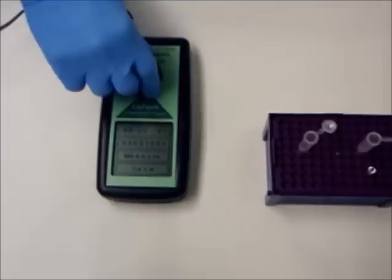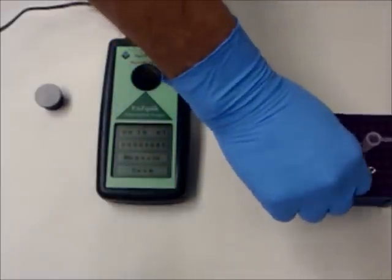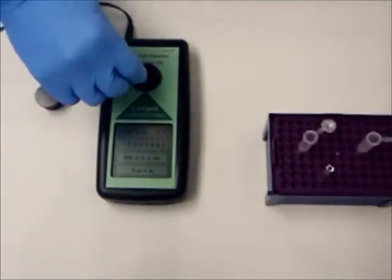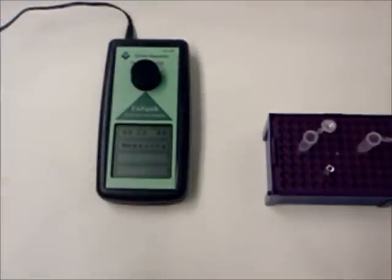Remove the control and place the sample small glass testing tube into the fluorometer test chamber and replace the cap. Push the measurement button on the touch screen and record the result of the sample.